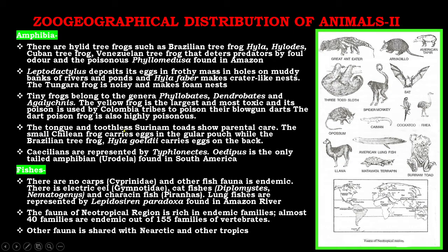The tongueless and toothless Surinam toads show parental care. The small Chilean frog carries eggs in the gular pouch, while the Brazilian tree frog Hyla gold-eye carries eggs on the back. Caecilians are represented by Rhinatrema. Oedipus is the only tailed amphibian belonging to order Urodela found in South America.